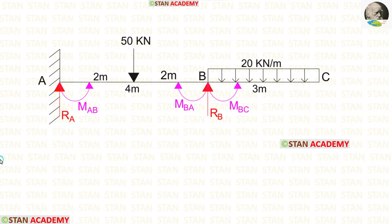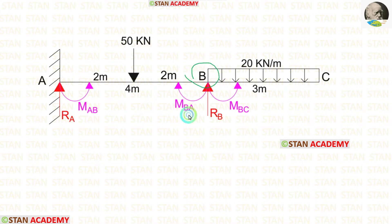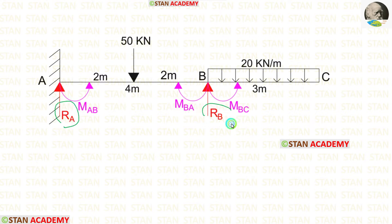In this analysis, we have to find 3 moments. At point A with the fixed support, there will be a moment MAB. At joint B, there are 2 moments: MBA and MBC. So totally we have to find 3 moments. We also have to find 2 vertical reactions, RA and RB.